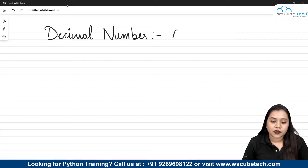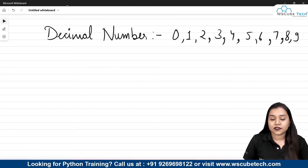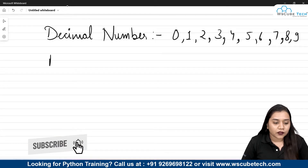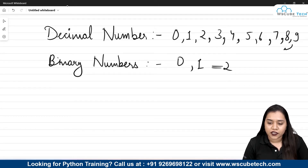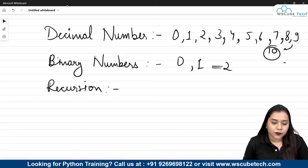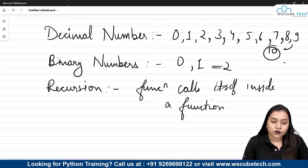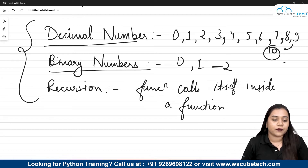Decimal numbers are zero, one, two, three, four, five, six, seven, eight, and nine — so these ten numbers make up all other numbers. Binary numbers are zero and one, meaning there are only two numbers in binary, whereas in decimal we have ten numbers in total. Recursion is a process where a function calls itself inside a function. We need to create a program which will convert a decimal number into a binary number using recursion.